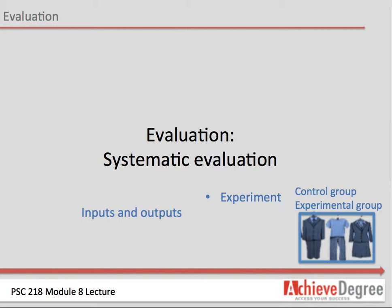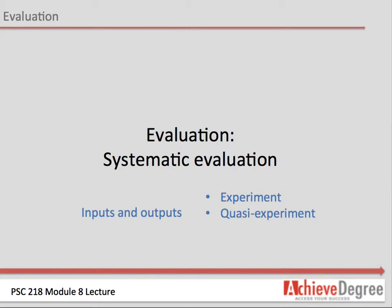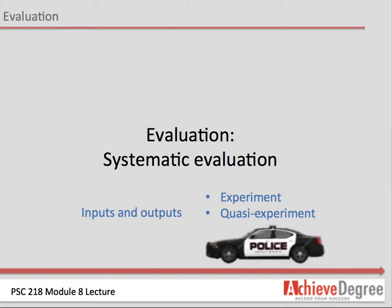Most policies cannot be tested in a controlled laboratory, and therefore a quasi-experiment must be conducted. Such an experiment is limited in that conditions cannot be controlled, and the influencing variables are often not known. For example, testing whether the presence of a police car parked on the side of a highway will reduce speeding. The problem is that we do not know the characteristics of the subjects — the drivers. On Tuesday from 12:30pm to 1:30pm on a highway without a police car, the percent of cars speeding was 15%. On Wednesday from 12:30pm to 1:30pm on the same highway but with a police car, the percent of cars speeding was 10%.